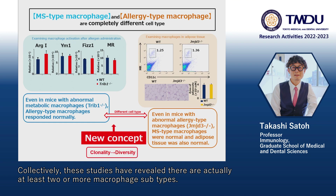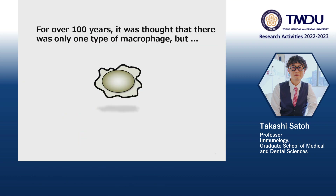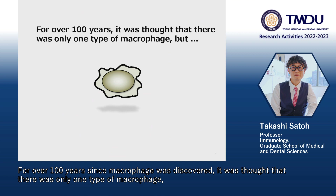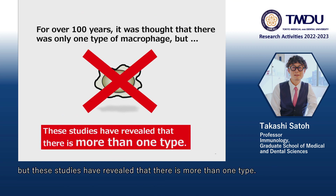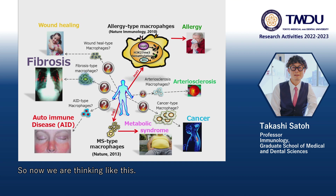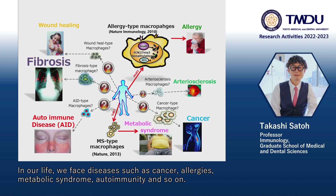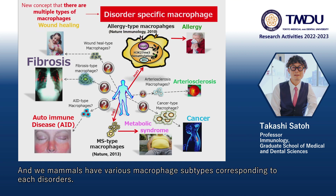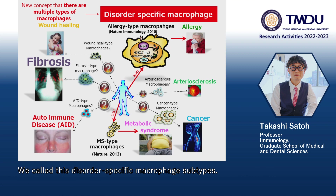Collectively, these studies have revealed that there are actually at least two or more macrophage subtypes. For over 100 years since macrophages were discovered, it was thought that there was only one type. Now we are thinking like this: in our life, we face diseases such as cancer, allergies, metabolic syndrome, autoimmunity, and so on. Mammals have various macrophage subtypes corresponding to each disorder. We call these disorder-specific macrophage subtypes.